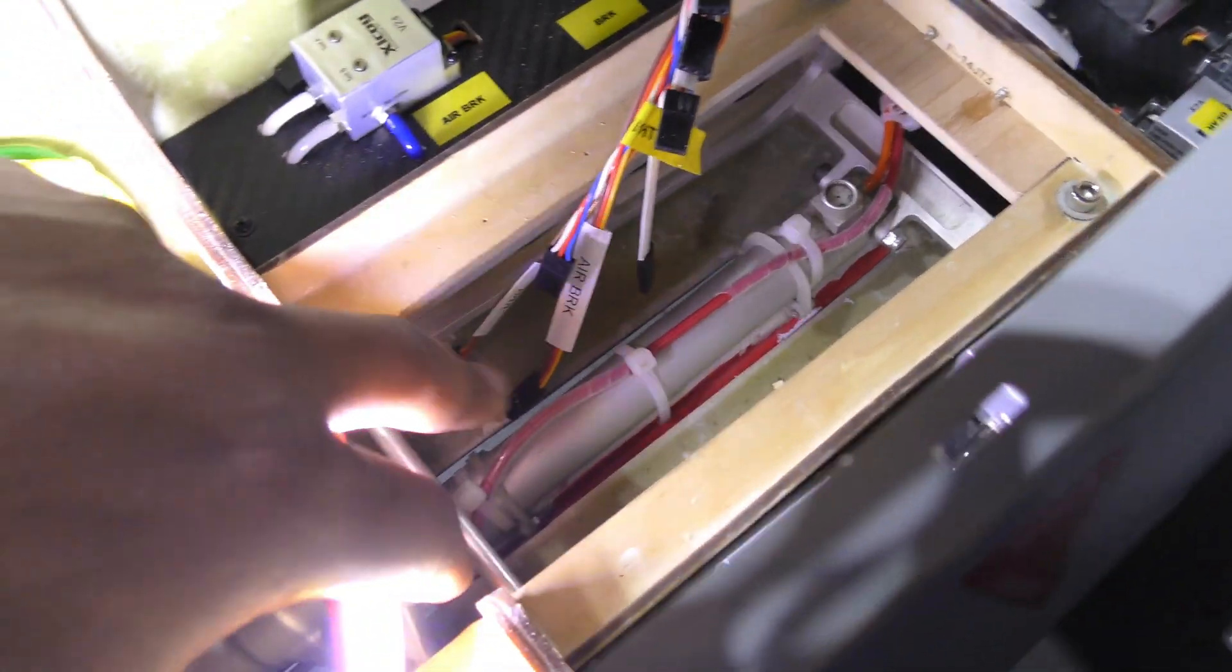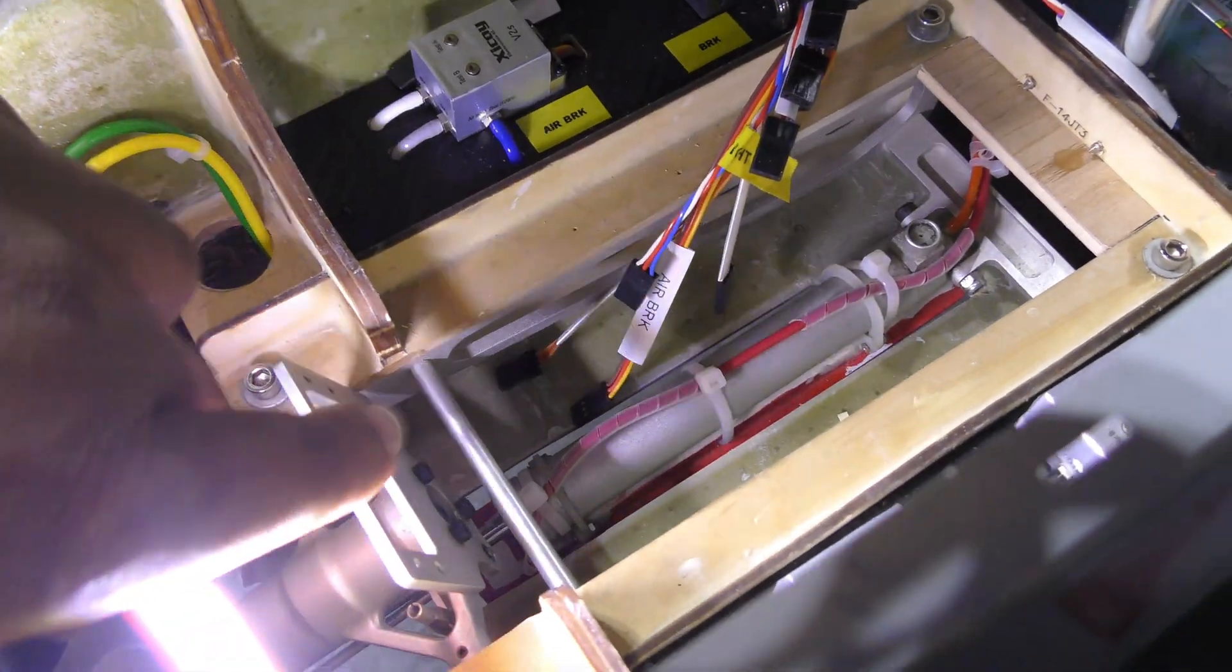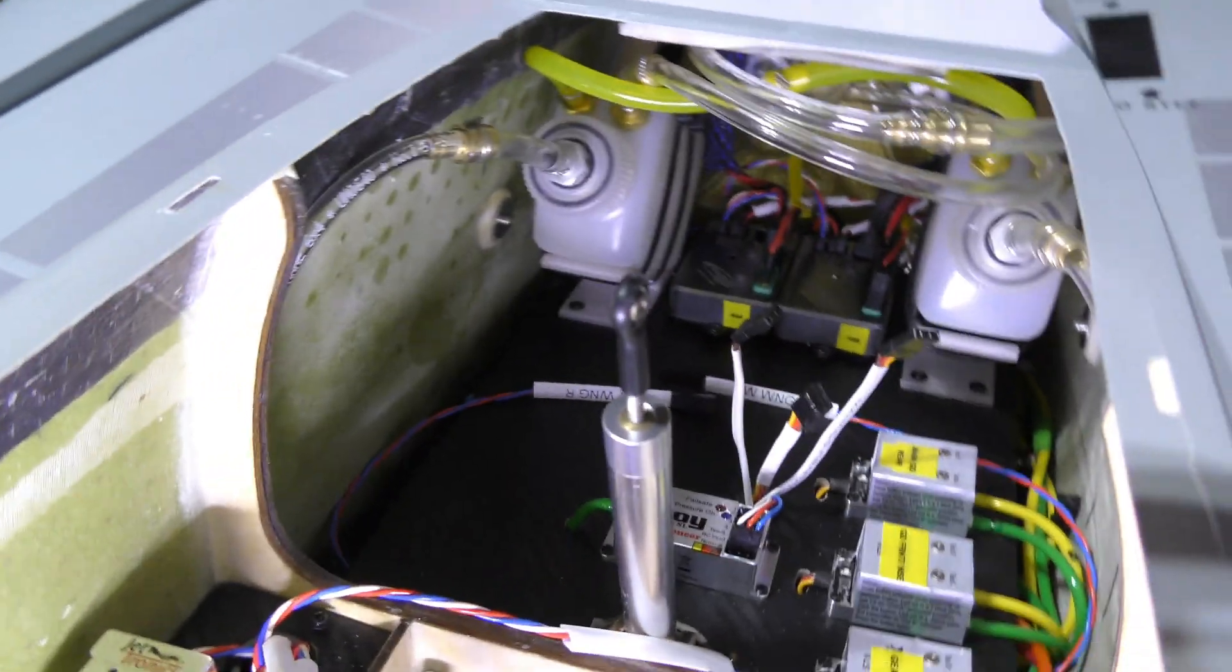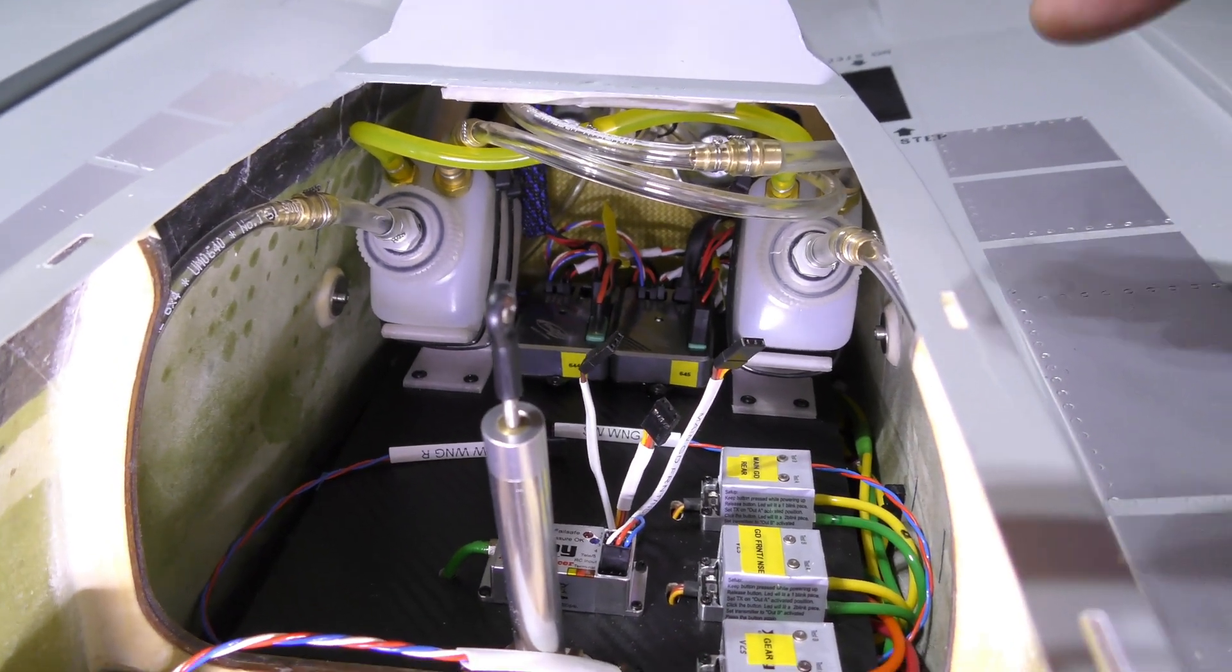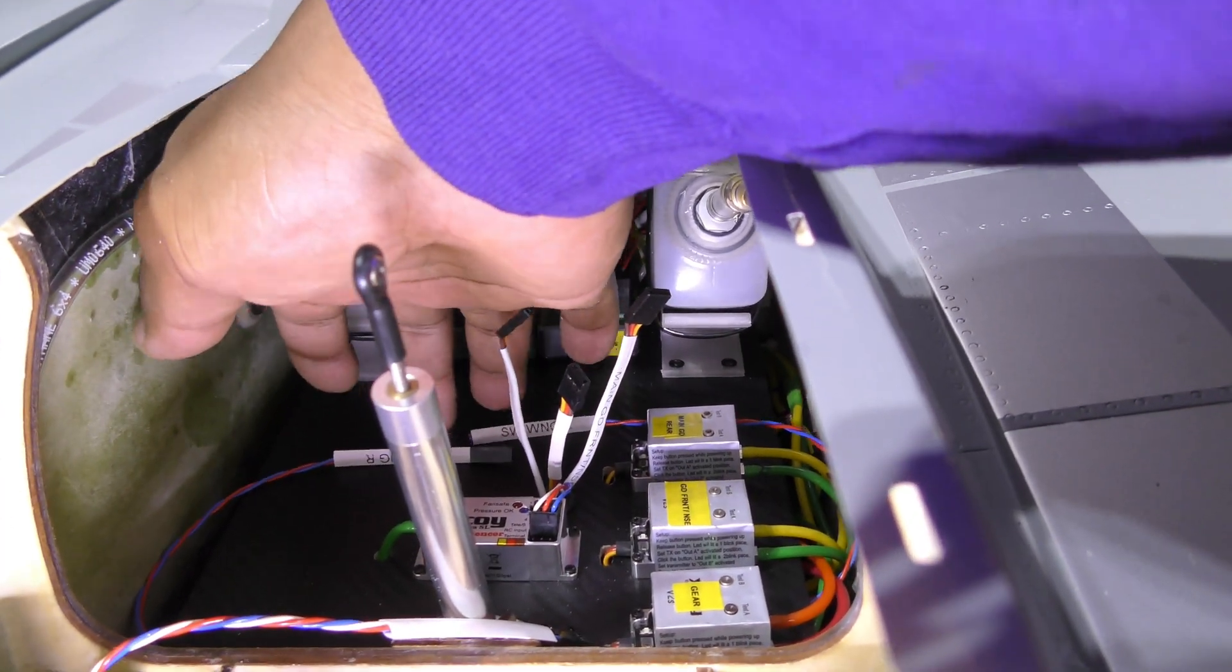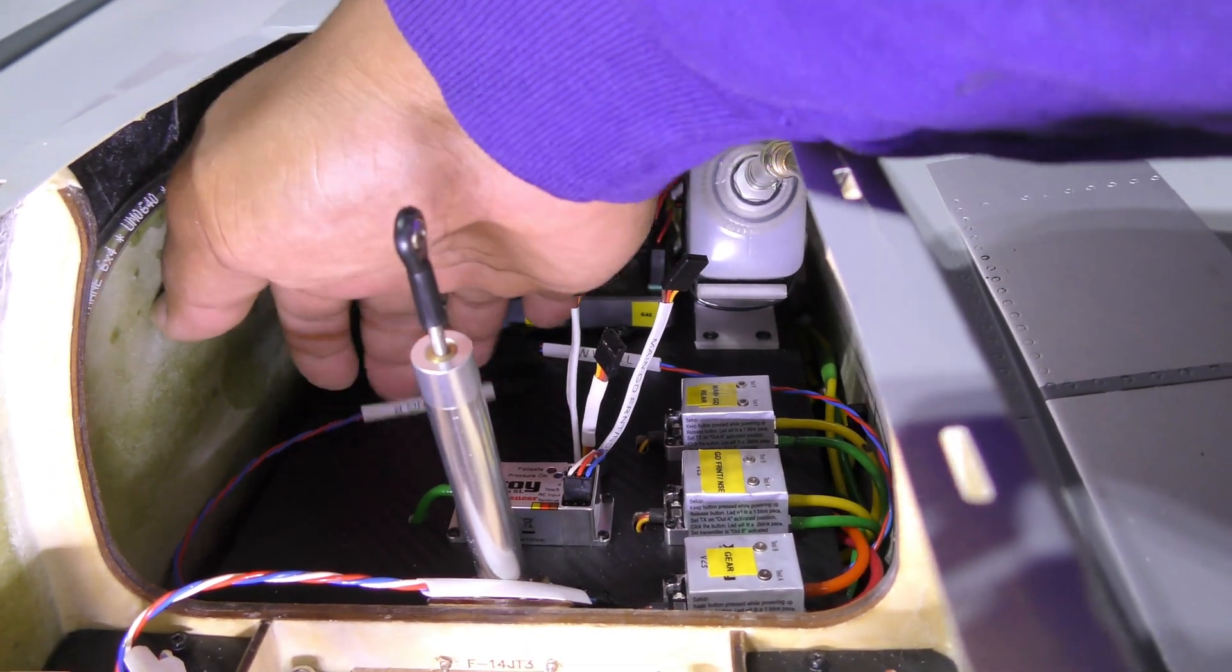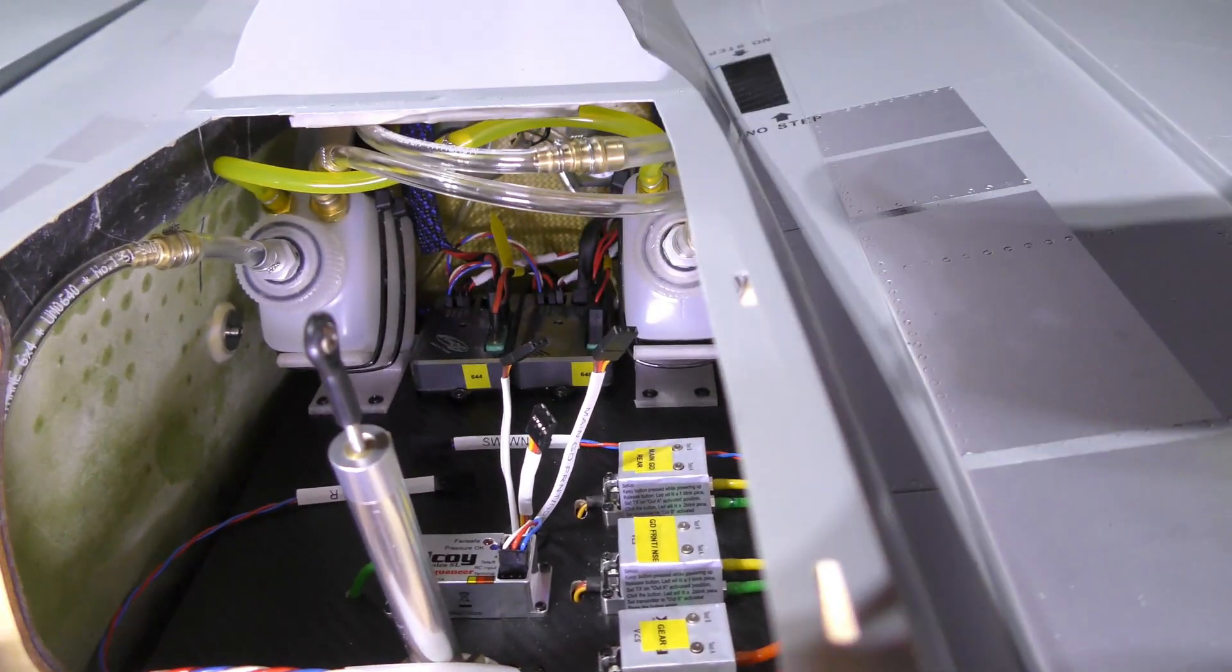I need to figure out where the front one goes, but I need the servo for the steering first. At this point, the fuel system is pretty much done. All that's left is getting whatever is required from Skymaster to mount the turbines, and then obviously the swing wing controller, which I've left room for. It's gonna go right in here, and these are the two wires that go to the swing wing actuators.